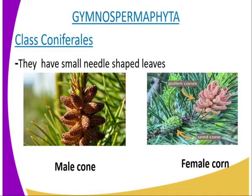Let us look at the general characteristics of the Gymnosperms. One, they bear cones of two types, that is the male cones and the female cones, as represented on our screens in the diagram. Two, after fertilization, seeds are borne on the female cones and the seeds are not enclosed in a fruit wall. Three, they show xerophytic characteristics such as rod-like leaves that are needle-like, and they have sunken stomata, as you can see from our diagram.